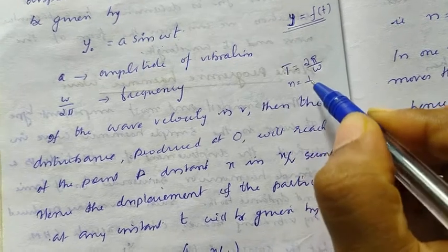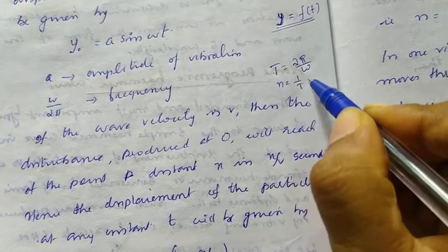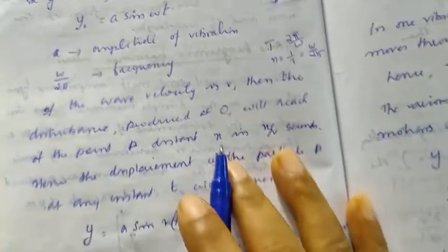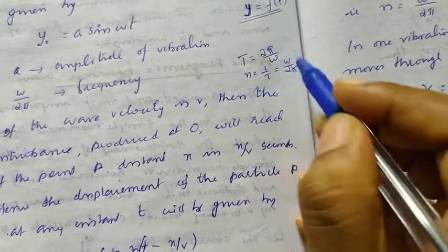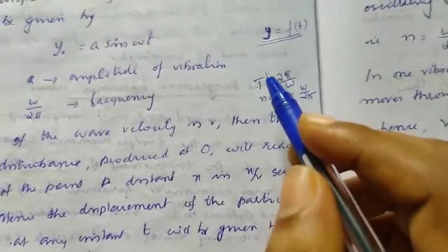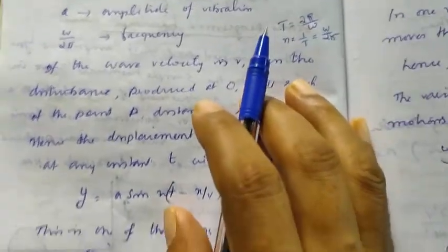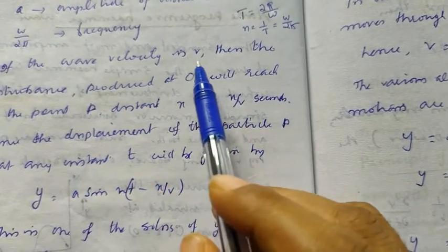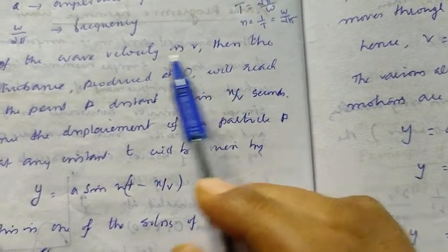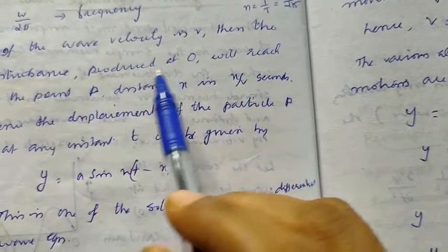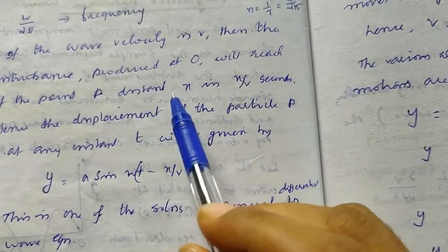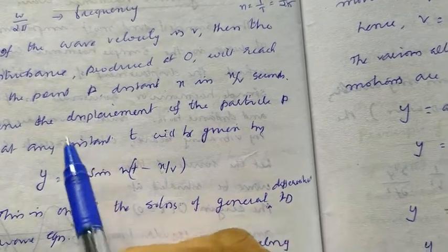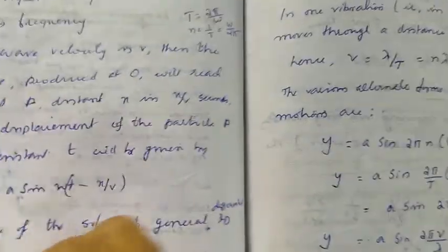The frequency is 1/T, which equals ω/2π. These relationships have already been discussed in simple harmonic motion. Now, if the wave velocity is v, then the disturbance produced at O will reach the point P, which is at a distance x from the origin, after a time of x/v seconds.